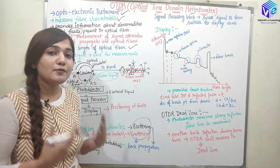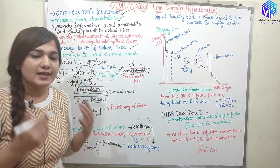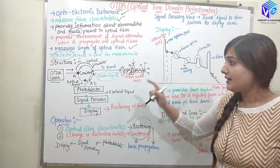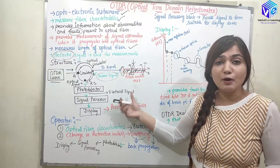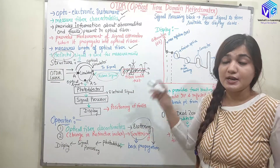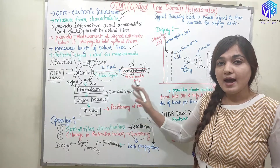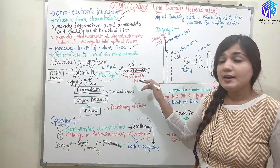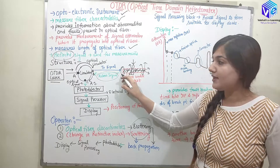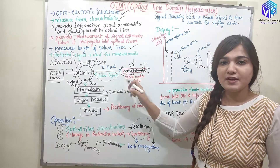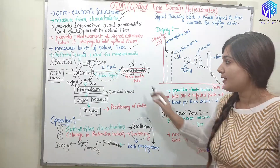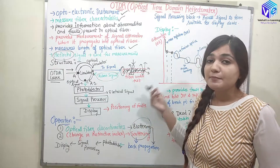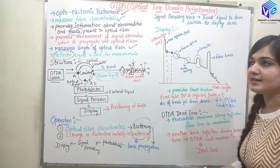Reflection occurs only when light scatters backward, which happens at any discontinuity in the fiber under test — such as connectors, splices, couplers, the input air-glass interface, or a fiber break. At each of these points, backside reflection is generated.